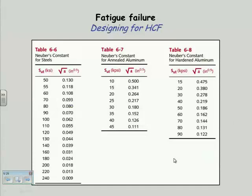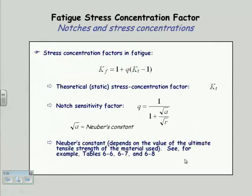So for a steel of whatever strength — and there are other tables for aluminum — I can apply the formula directly without drawing the curves. If I have a 100,000 psi steel, my Neuber's constant sqrt(a) is the value from the table — already square rooted, I don't take the square root again. I pull that number out, put it in the formula, divide by sqrt(r), get my Q. Then take Q, multiply by (K_t minus 1), add back the 1, and I've got K_f. I do that every time I calculate a stress in a fatigue-loaded situation.